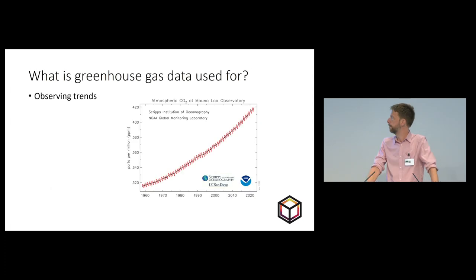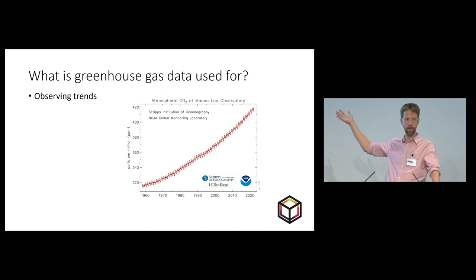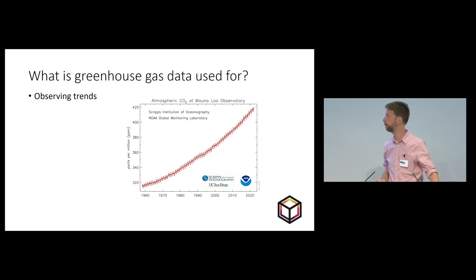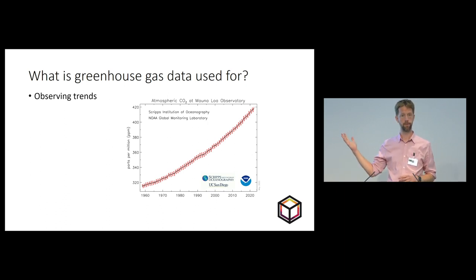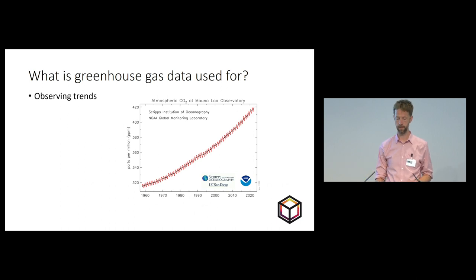The kind of data we're interested in is anything related to greenhouse gases — concentrations in the atmosphere. You're probably familiar with the Mauna Loa Keeling Curve, the CO2 record over the last few decades showing increasing CO2 concentrations in the atmosphere. We use data like this to keep track of global levels of greenhouse gases, which is crucially important for understanding our climate.